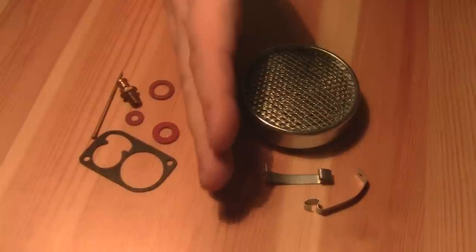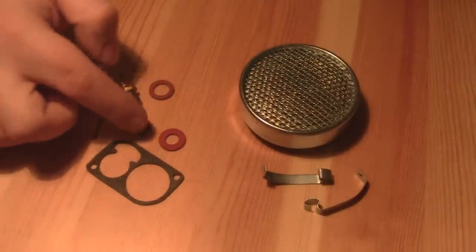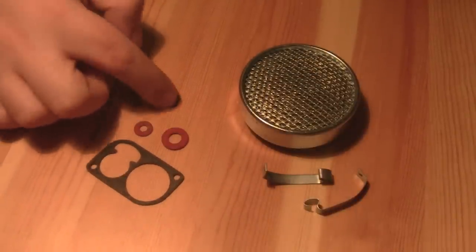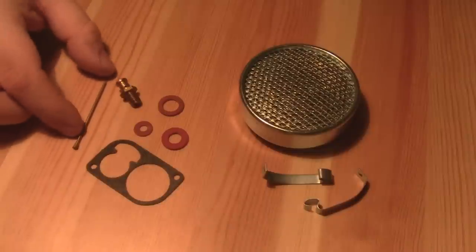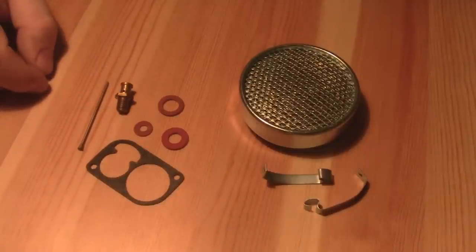Here's what comes in the repair kit from Villiers Parts, so you've got new gasket for the top bit, the fiber washers, and the needle valve and seat for the float.